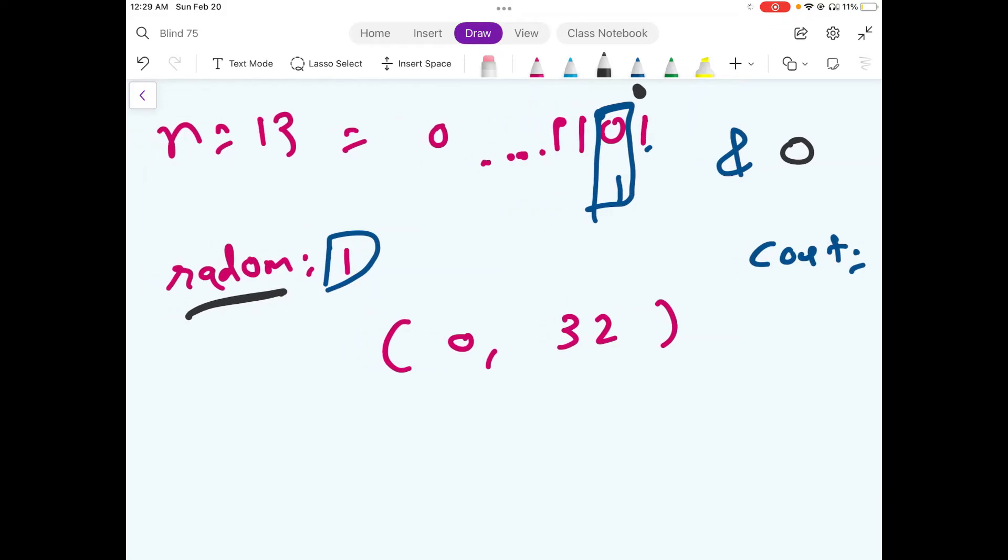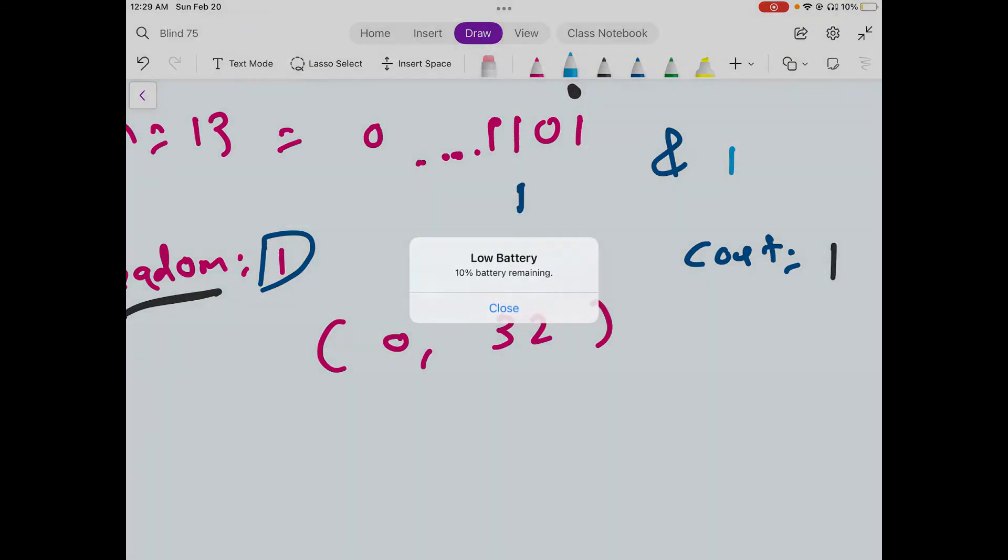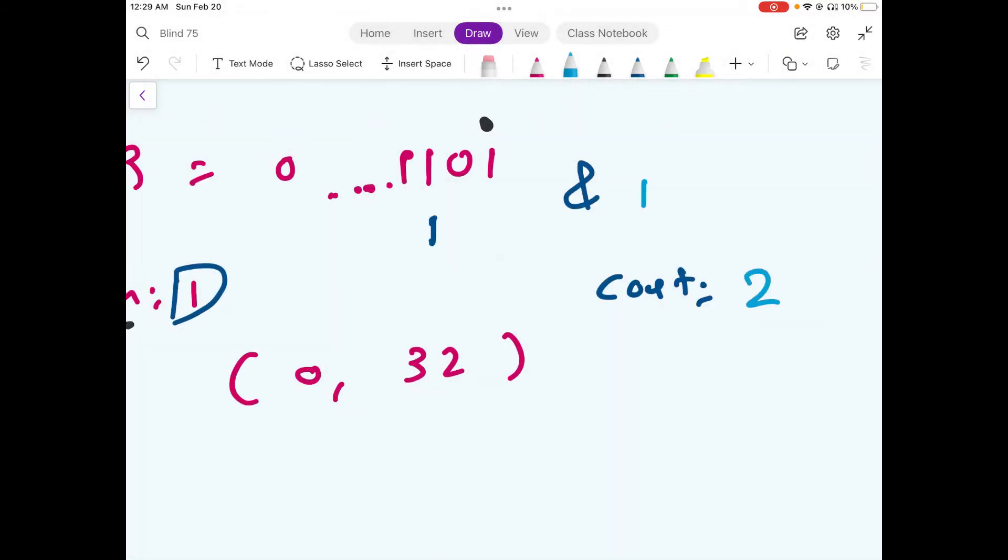And again, we would do a left shift for this one element. And again, we would do an AND operation. The value we would get is 1, which means we need to update our counter. So, counter becomes 2.